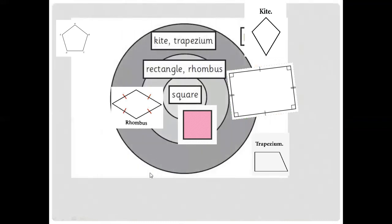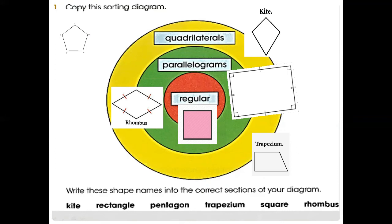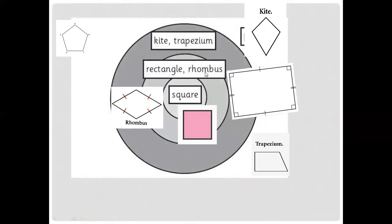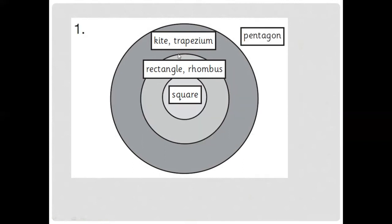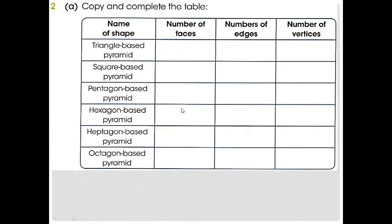For example: square goes in the regular place because all its sides are equal. Rectangle goes in the parallelogram section. Kite and trapezium have different shapes — as you can see here, this is what a kite and trapezium look like. Pentagon is totally different with five sides, so we put it outside the quadrilateral section, meaning pentagon is outside this section.